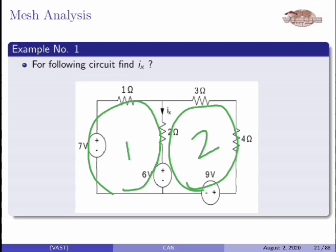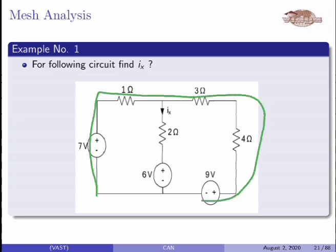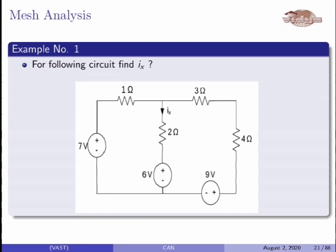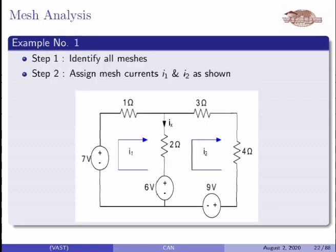That's why they are known as meshes. You can identify other closed paths also - this outermost closed path has another closed path inside it, so that outermost closed path is not a mesh. So here there are two meshes, identified as the first mesh and the second mesh.